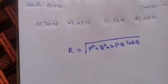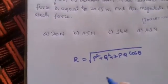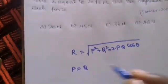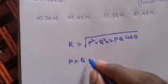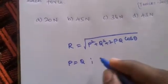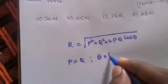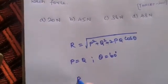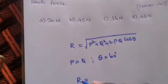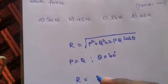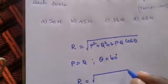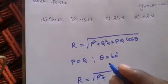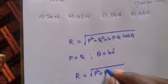Here we say P equals Q, and theta is 60 degrees. Substituting, R = √(P² + P² + 2P² cos60°).